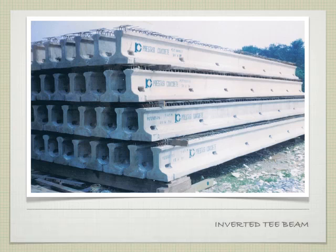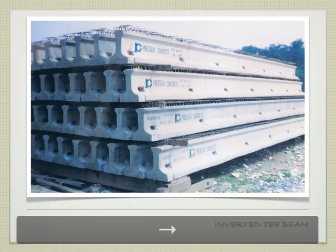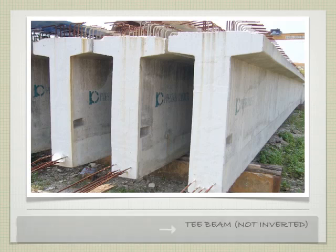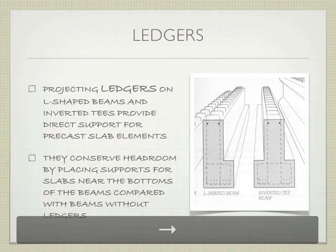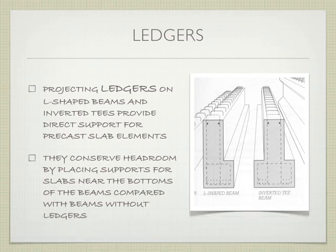This is the inverted T beam. This is a T beam that's not inverted — we know because the rebar sticks out the top. Shapes can vary depending on what type of building you're making. Ledgers — these projecting shelves on the L-shaped beam and the inverted T beam — are great because they can help us conserve headroom in the overall height of the building.